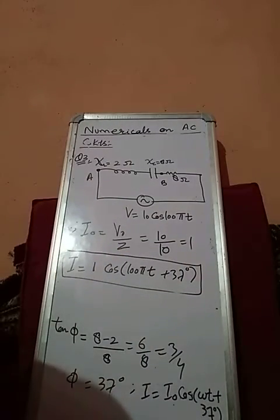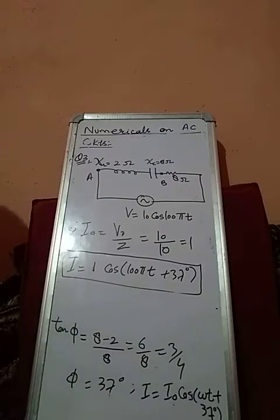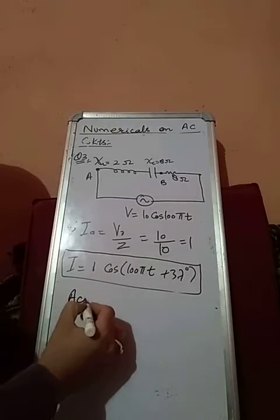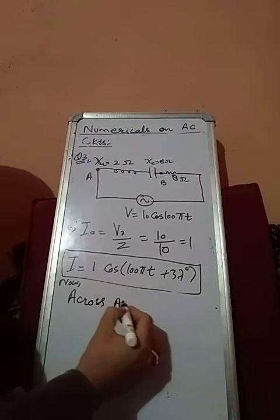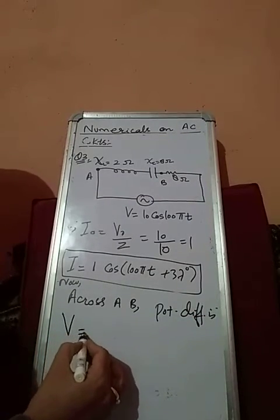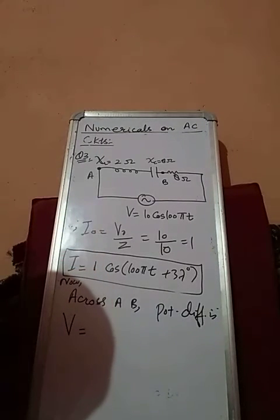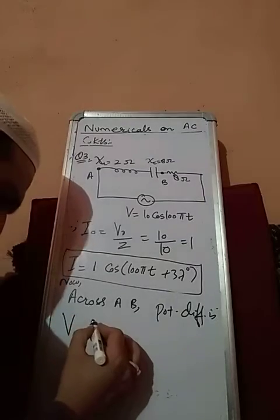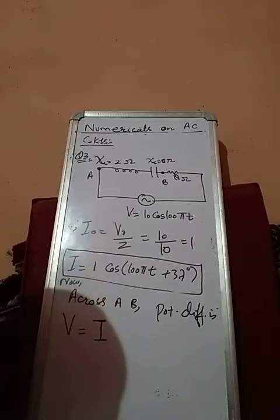Now the third thing is very important, that is you have to find the instantaneous voltage between A and B, the instantaneous potential difference. How can you find the instantaneous voltage across AB? Potential difference instantaneous will be the instantaneous current into the resistance.